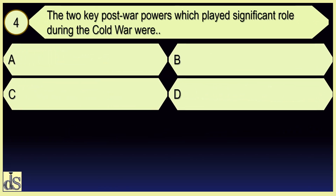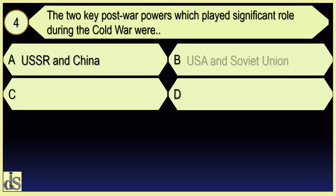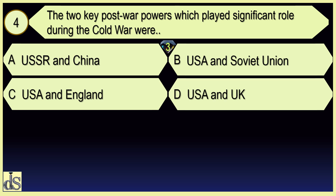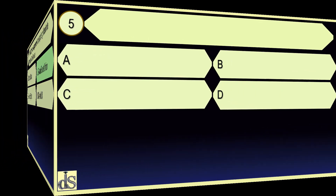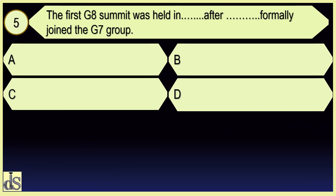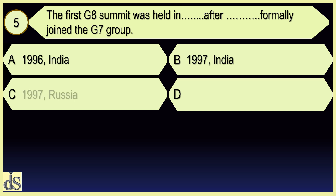The two key post-war powers which played a significant role during the Cold War were. The first G8 summit was held after Russia formally joined the G7 group — 1997, Russia.